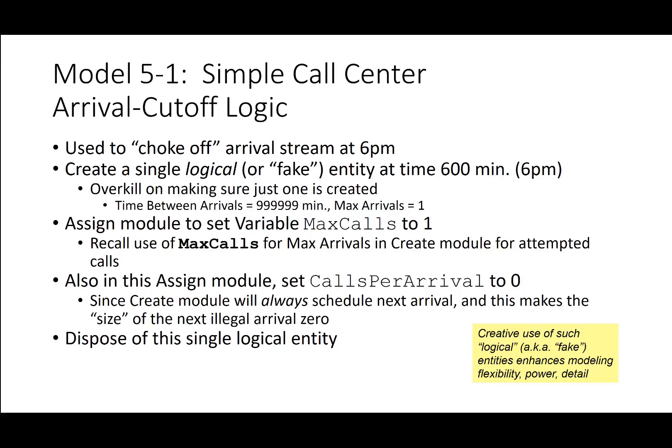The arrival cutoff logic chokes off the arrival stream at 6 p.m. to prevent new calls after hours. A single logical entity is created at time 600 minutes — 600 minutes after the 8 a.m. start equals 6 p.m. An overkill max arrivals of 999,000 minutes is used as a very high value. The assign module sets the variable max calls to 1, and calls per arrival to 0, so the next scheduled arrival has size zero. The single logical entity is then disposed.